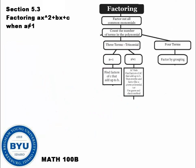Up to this point, we've covered the three types of factoring: 3-term factoring and 4-term factoring by grouping. This factoring chart helps you master the steps. You always start by taking out any common factors, then count the number of terms. If it's a trinomial, ask: is the first value 1 or not 1? If it's 1, find factors of C that add up to B. If it's not 1, apply the AC rule: take A times C, find factors of AC that add up to B, rewrite as a 4-term polynomial, then factor by grouping.